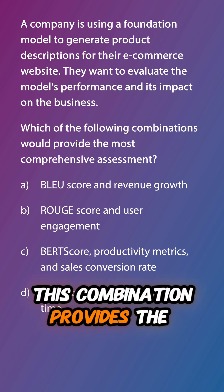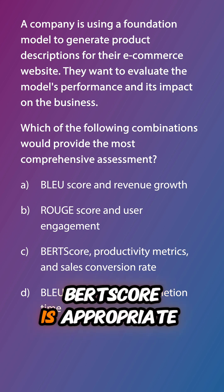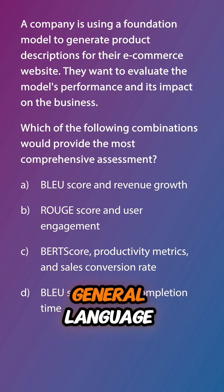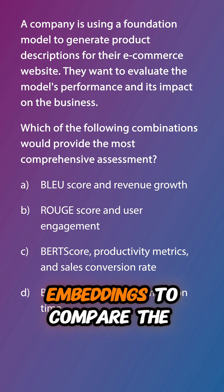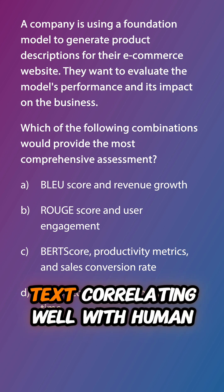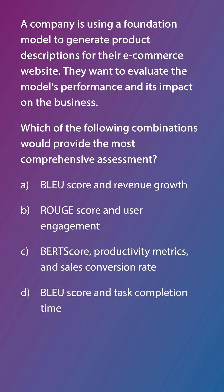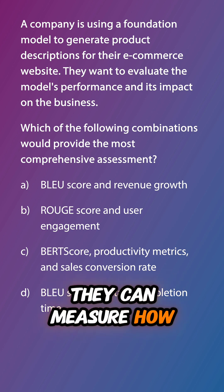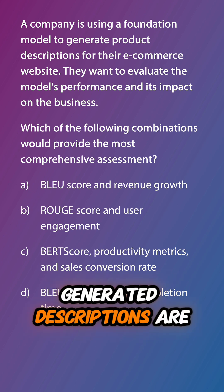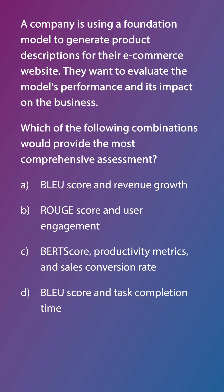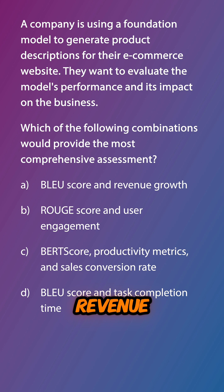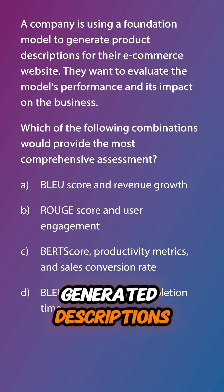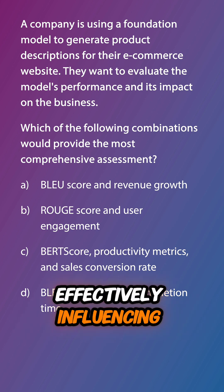This combination provides the most comprehensive assessment because BERT score is appropriate for evaluating general language generation tasks like product descriptions. It uses contextual embeddings to compare generated text to reference text, correlating well with human judgment. Productivity metrics address the business objective of efficiency, measuring how quickly AI-generated descriptions are produced compared to human-written ones. And the sales conversion rate is a crucial business metric directly tied to revenue, helping determine if AI-generated descriptions are effectively influencing customer purchasing decisions.